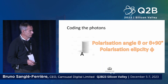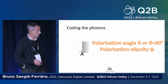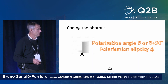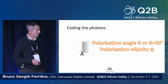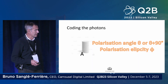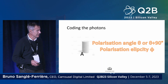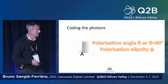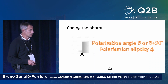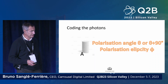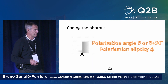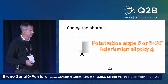The first photon arriving in A gets coded according to its polarization, with its angle and its ellipticity. Of course, because it's a photon, we can't say which angle it's going to be detected at, but we can say it's going to be this angle or this angle plus 90 degrees.